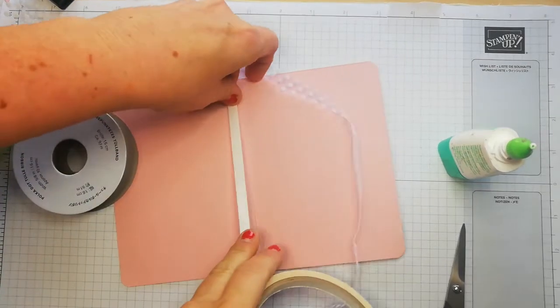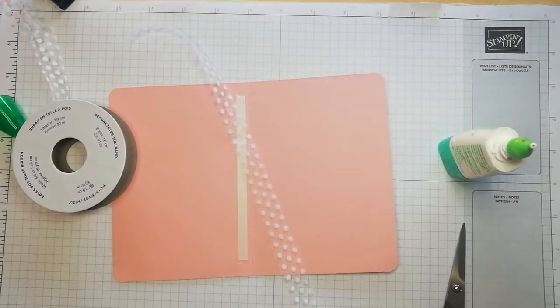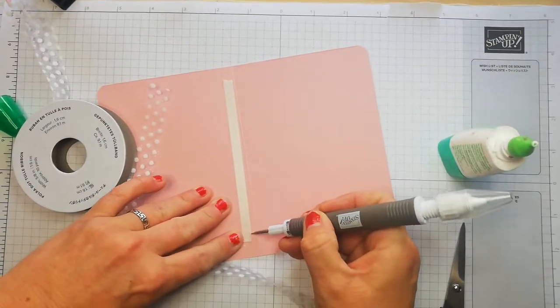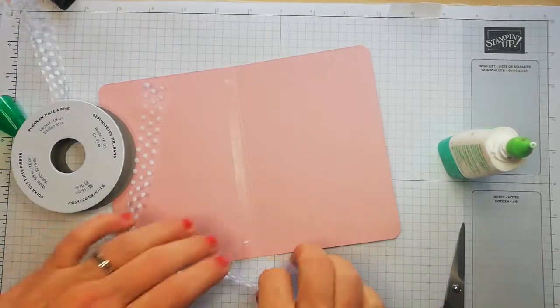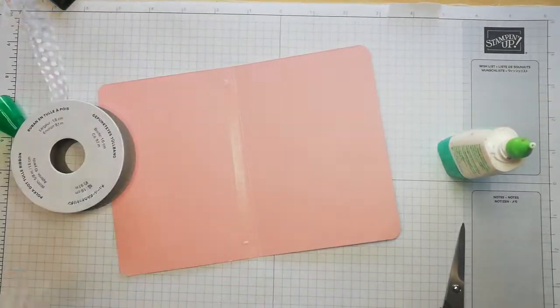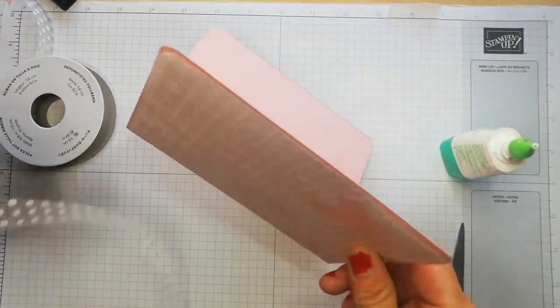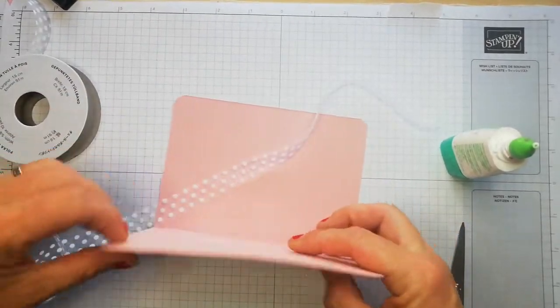I'm just going to pop another bit of tearing tape there like that, and I'm going to tear this down. I need to make sure that I have more of a tail at the top because that's where I want to tie my bow.